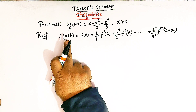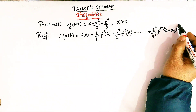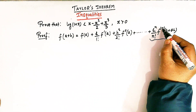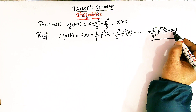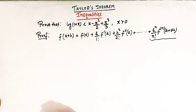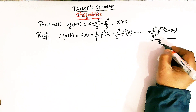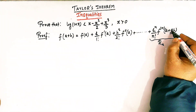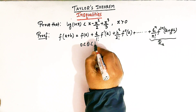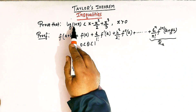With the usual notations, Taylor's theorem is given by this expression, where the term h raised to n divided by n factorial times the nth derivative of f calculated at (a + θh) is known as Lagrange's form of remainder, usually denoted by Rn. Here θ lies between 0 and 1. We'll use this expression to arrive at the required inequality.